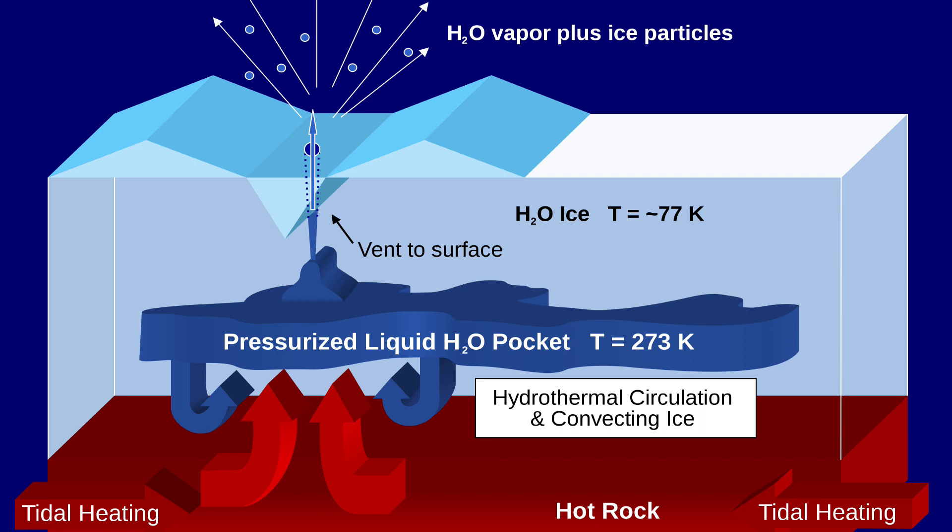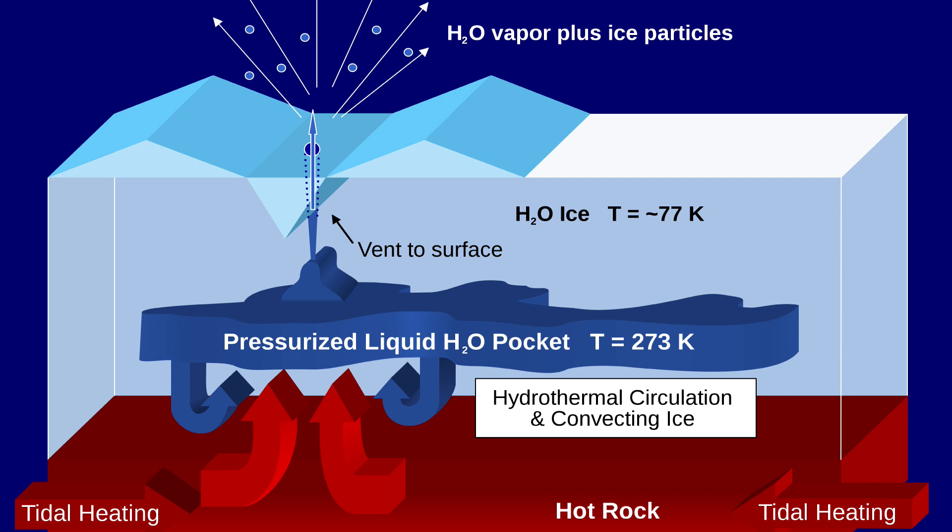Second, the pressure must be greater underneath than at the surface of the icy moon. High pressures deep within Enceladus push the volatiles — the cryo magma, in this case water — to the surface. Third, the temperature below the surface must be hotter than the surface temperature, and this is especially true of the volatiles coming out of the eruptive vent on a cryovolcano.